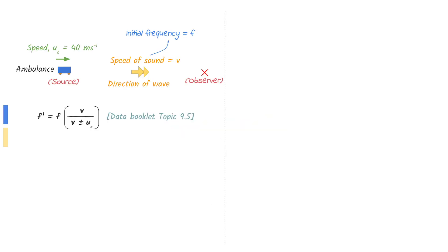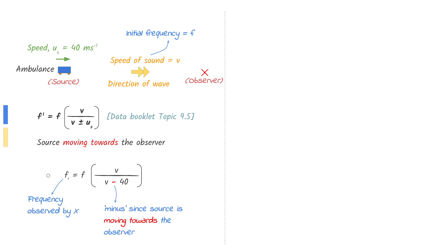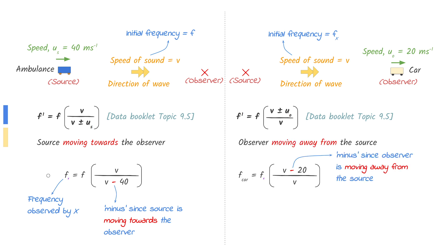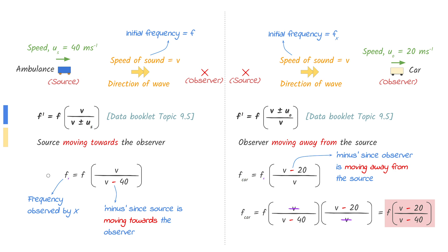The first method to solve this question is to make X the stationary point. The ambulance approaches point X at a speed of 40 meters per second. Use the equation from the data booklet to find the frequency observed at X, noting that minus is used in the denominator since the source is moving towards the observer. Next, point X becomes the source and the car is the observer. The frequency of sound emitted from X is the frequency found earlier. Use the equation to find the frequency observed by the car, noting minus in the numerator since the observer moves away from the source. Substitute the frequency fx and cancel out to find your answer.